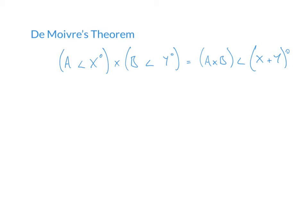Here's a quick example. Let's say we have a number a at an angle of x degrees. We're multiplying this number in polar form by another number b at an angle of y degrees. The result of that multiplication would be a times b at an angle of x plus y.